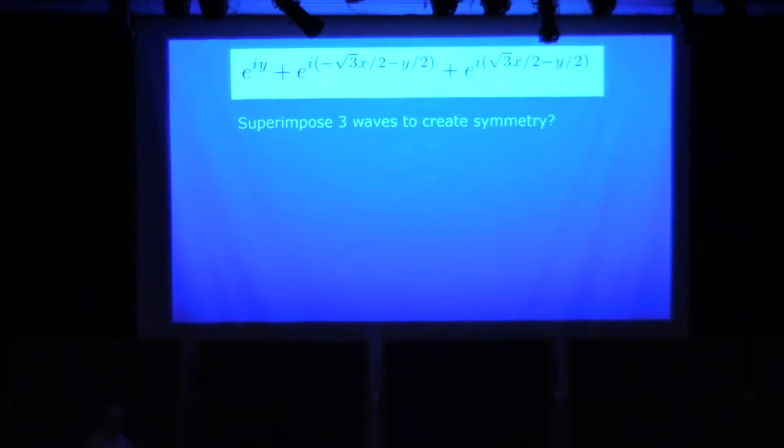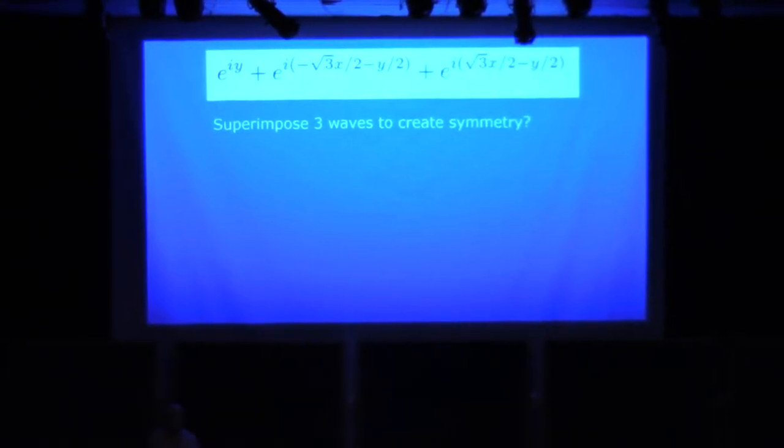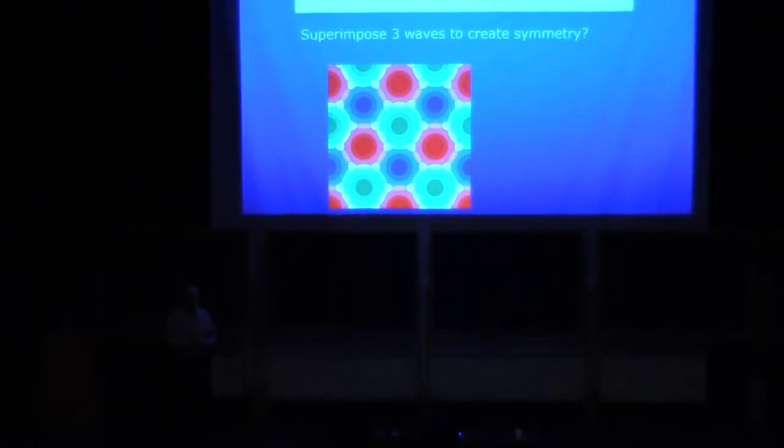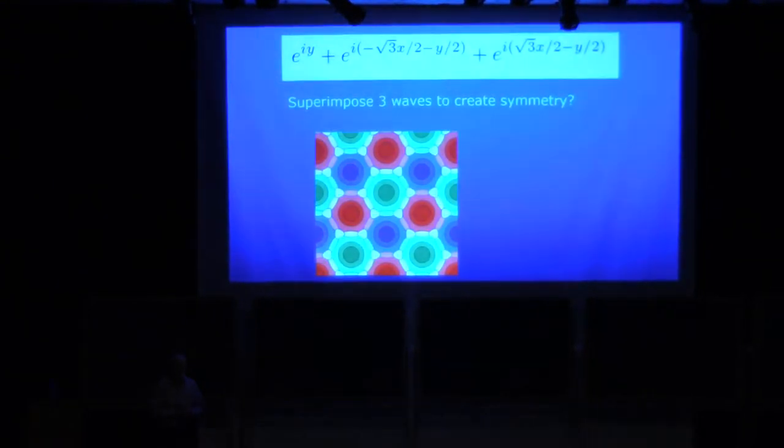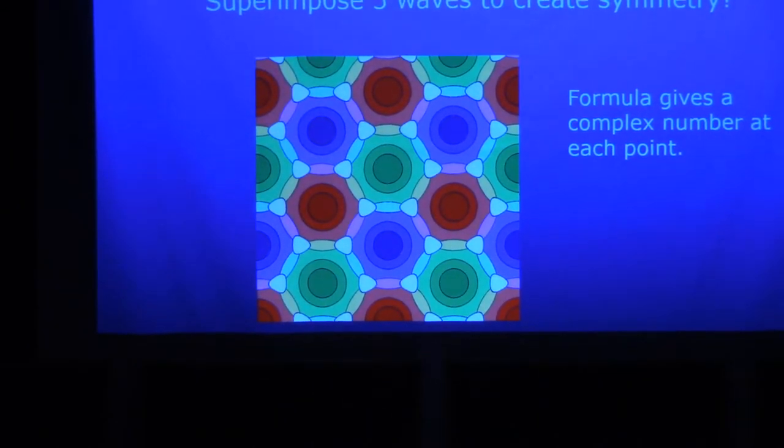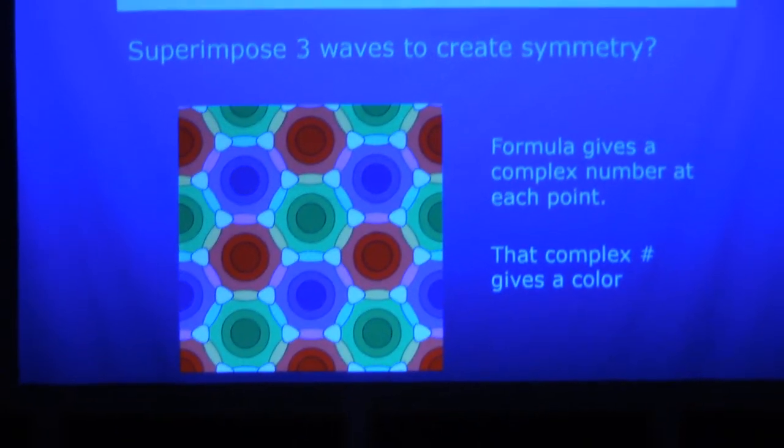Now the fastest way I can explain the domain coloring algorithm is: when I say complex number, you think that's one of those colors. When it's the complex number zero, that's white. When it's the complex number infinity, that's way out there, one of the dark colors. Now this formula is a wave going this way, the second one is a wave going 120 degrees that way, and there's a wave going 120 degrees that way. I'm going to add up those waves and use this coloring algorithm where I get a complex number and it turns into a color, and oh mercy, it looks like that.